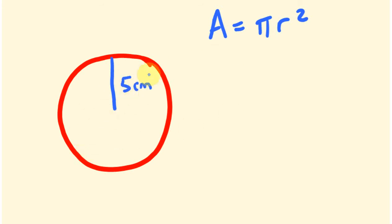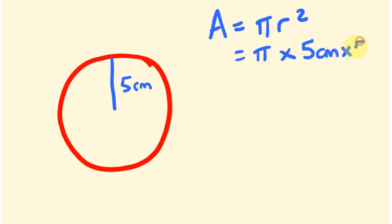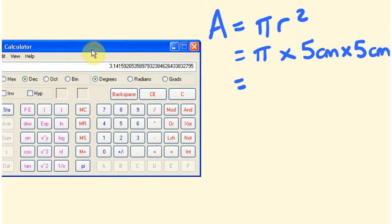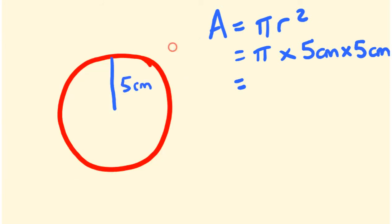The area is what we want to know — the space within the circle — and we're going to be working it out in centimeters squared. With the radius in centimeters, our answer is going to come out in centimeters squared. So we sub into the formula: area equals pi times radius squared, which is 5 cm times 5 cm. Pi times 5 times 5 gives us 78.54 centimeters squared.